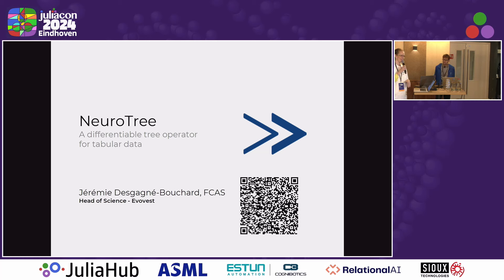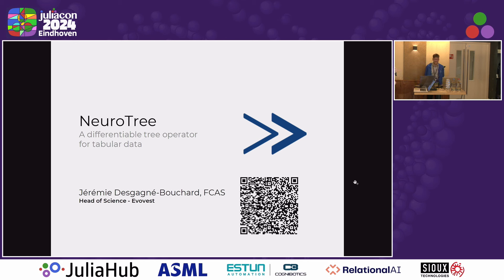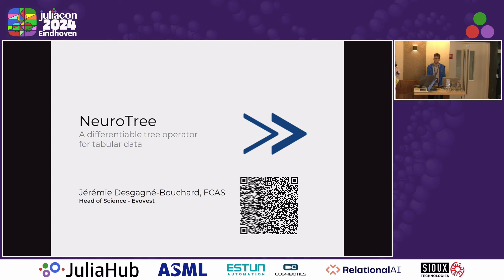We have an exciting block of AI, ML, and AD sessions to be presented by bright intellectual minds of the Julia community. The first talk is about NeuroTree, a differentiable tree operator adapted for the treatment of tabular data newly introduced in Julia by NeuroTrees.jl — a general operator composable with the building blocks of the Flux ecosystem in Julia. Please welcome Jérémy Desgagne-Bouchard.